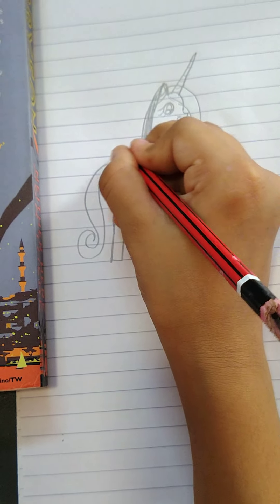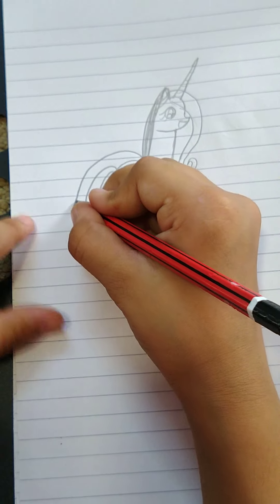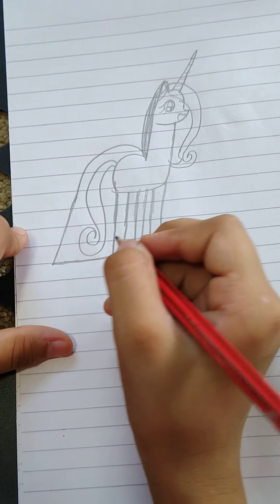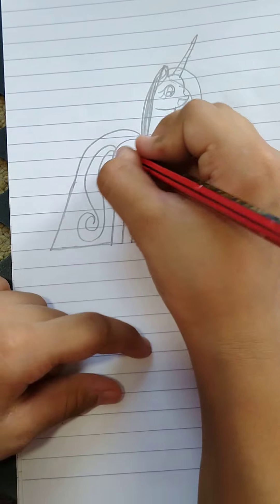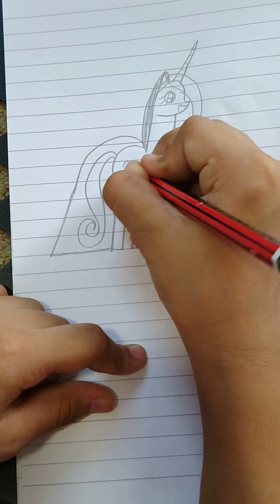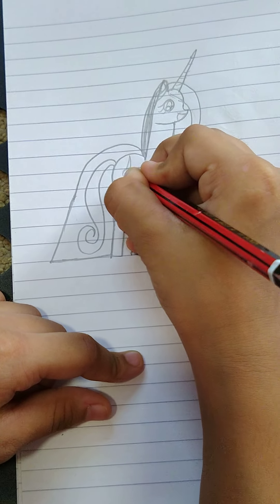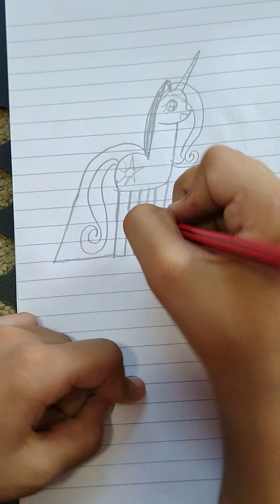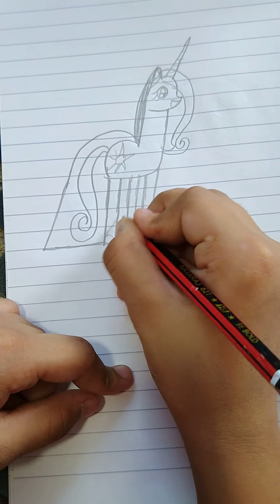Then a gown. Then you can make a cutie mark. Then a sandal.